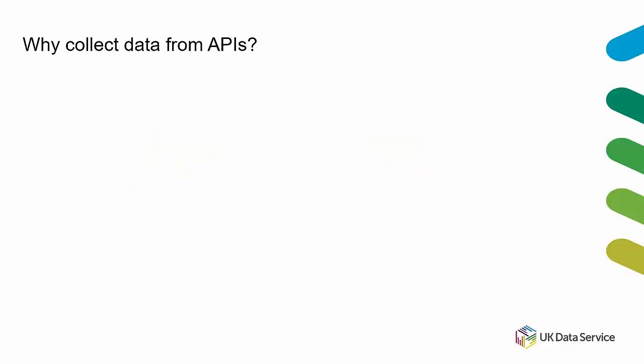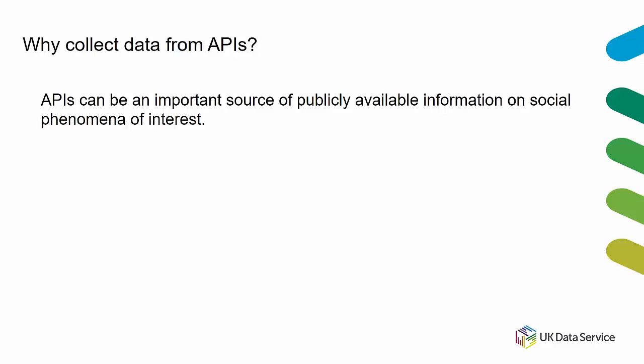Why would we collect data as social scientists — what's the value of an API? First and foremost, APIs are an important source of publicly available information on social phenomena of interest. In some cases, like the UK government's online data portal, there are weekly or monthly data releases from departments like Transport or Health. If you're interested in that data, you'd normally go to that website and download files manually.